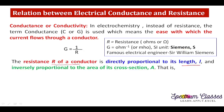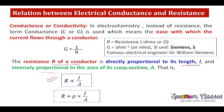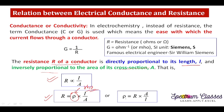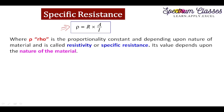The resistance R of a conductor is directly proportional to its length L and inversely proportional to the area of cross-section A. So R ∝ L/A. Removing the proportionality sign, we incorporate the proportionality constant rho (ρ), giving rho = R·A/L. Rho depends on the nature of the material and is also called resistivity or specific resistance.